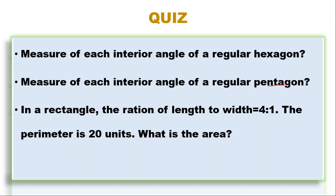What is the measure of each interior angle of a regular pentagon? A pentagon is a five-sided figure, so n equals 5. Using the formula (n minus 2) divided by n, multiplied by 180, we substitute n equals 5, and this gives 108 degrees. So the measure of each interior angle of a regular pentagon is 108 degrees.